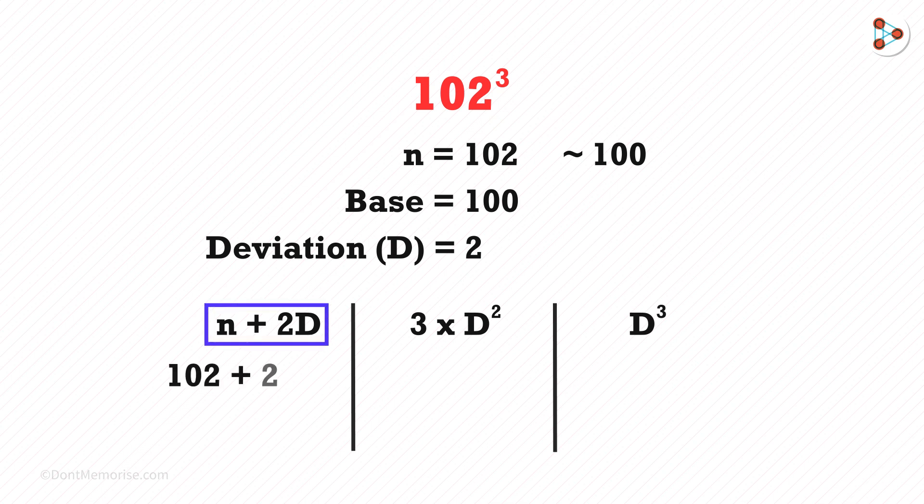n plus 2D is 102 plus 2 times 2. 3 times D squared is 3 multiplied by 2 squared. And D cubed is 2 cubed.